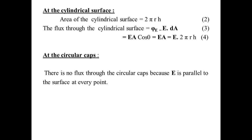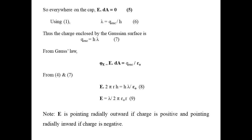Next, we examine the flux at the cylindrical surface. We know that the area of the cylindrical surface is 2 pi R H. The flux through the cylindrical surface phi-E equals E dot dA, that is E times A times cos 0 degrees, since E and dA point in the same direction, giving E times A equals E times 2 pi R H. At the circular caps, there is no flux because E is parallel to the surface at every point, so E dot dA equals zero everywhere on the caps. We have the linear charge density lambda equals the charge enclosed divided by the length H. Thus, the charge enclosed by the Gaussian surface is Q-enclosed equals H times lambda.